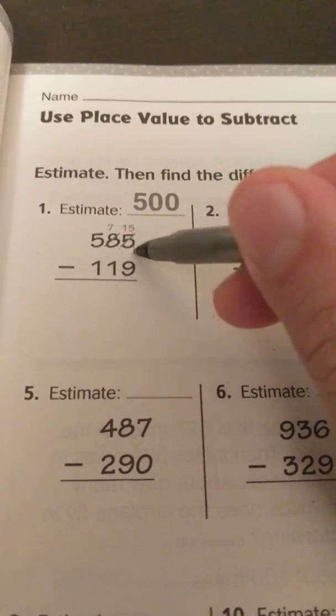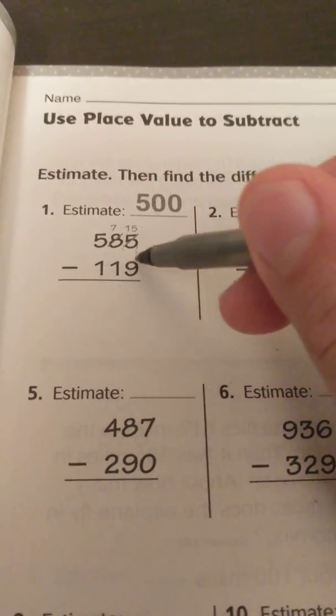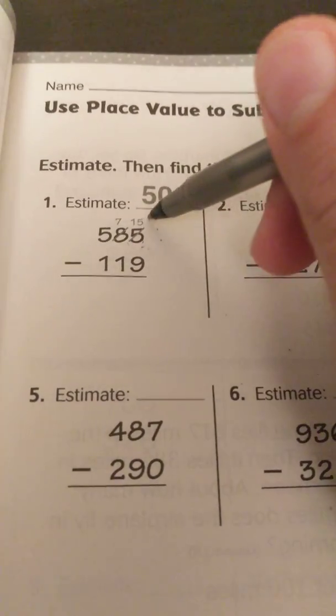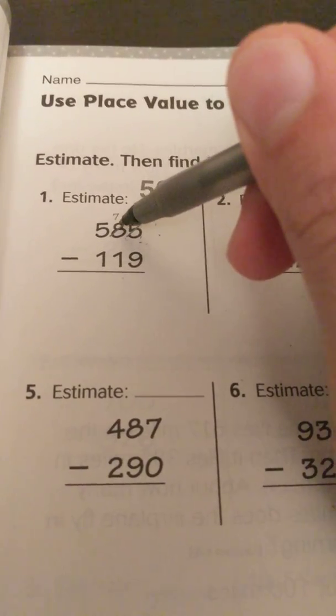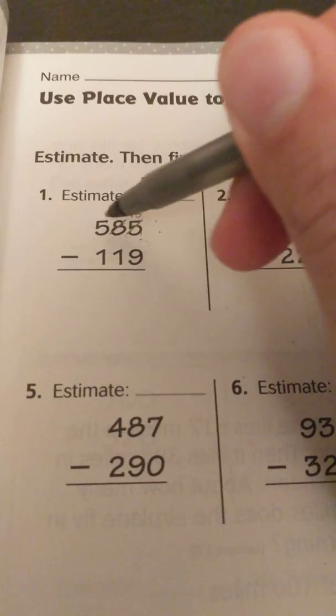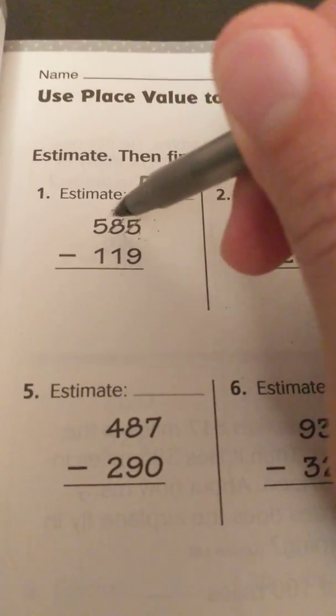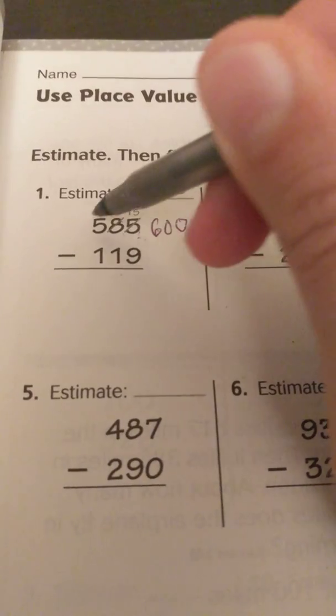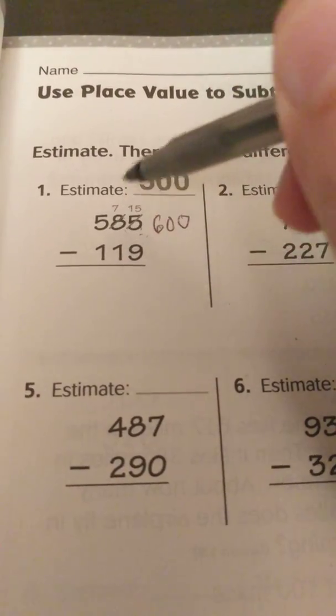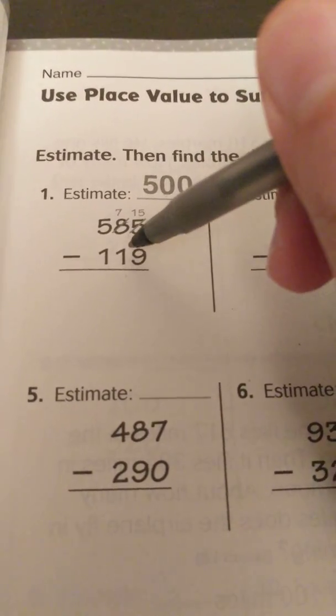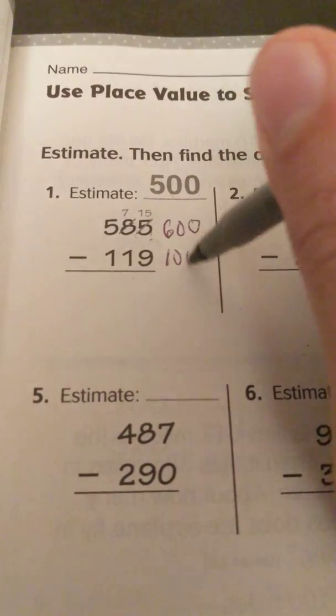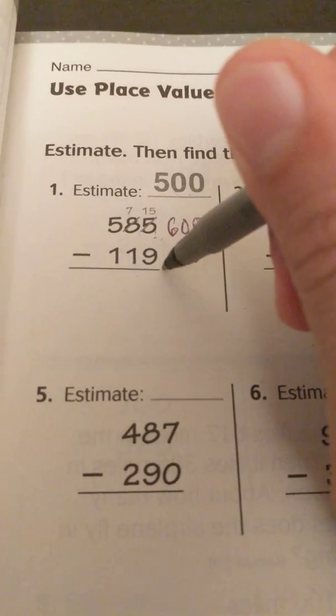If I'm looking at 585 minus 119, and I'm rounding to the nearest hundred, which I assume because I see 500 here, I would look at my tens and see the 8 will change this to 600 because I'm over 5. And then if I'm looking at 119, I'm looking at my tens and I'll have 110, so this is going to go down to 100. So that's how they came up with 500 there.